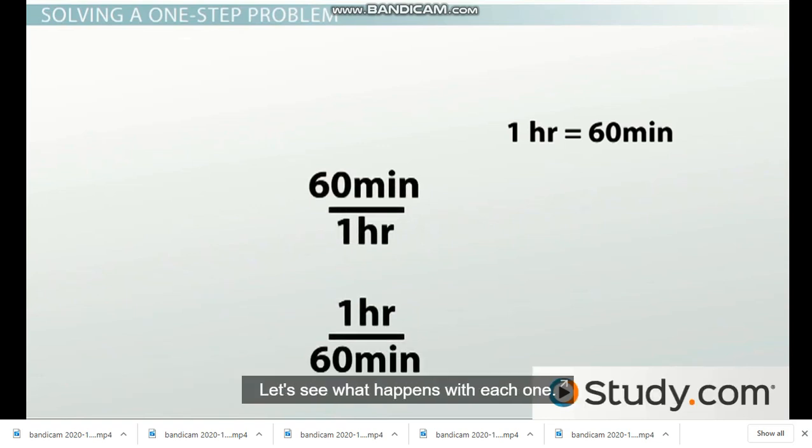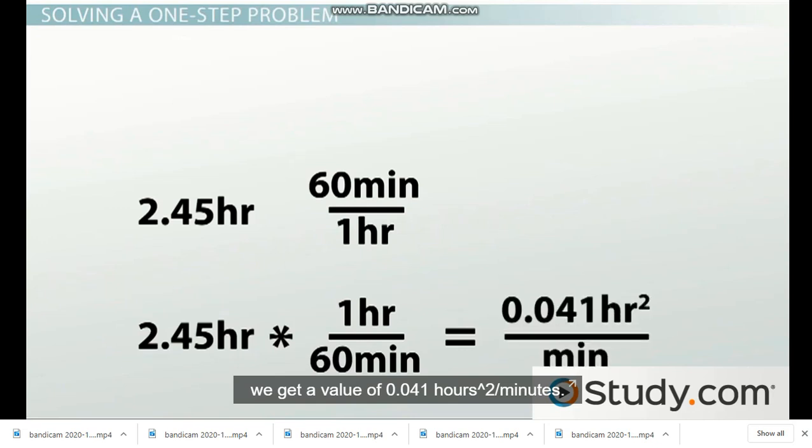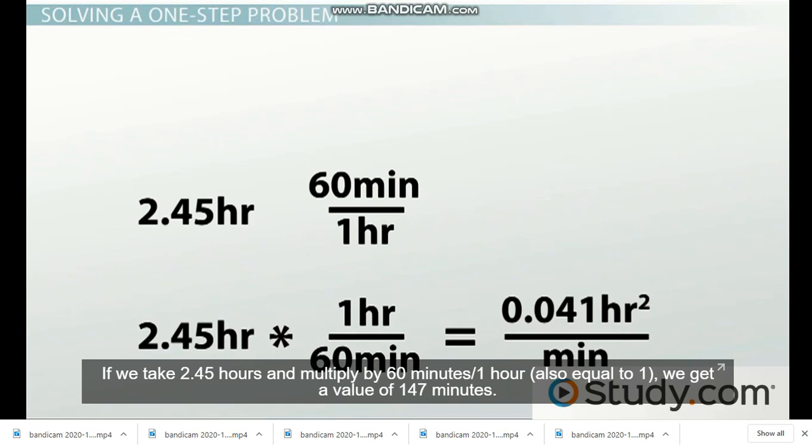Let's see what happens with each one. If we take 2.45 hours and multiply by 1 hour over 60 minutes, which is equal to 1, we get a value of 0.041 hours squared over minutes. If we take 2.45 hours and multiply by 60 minutes over 1 hour, also equal to 1, we get a value of 147 minutes.